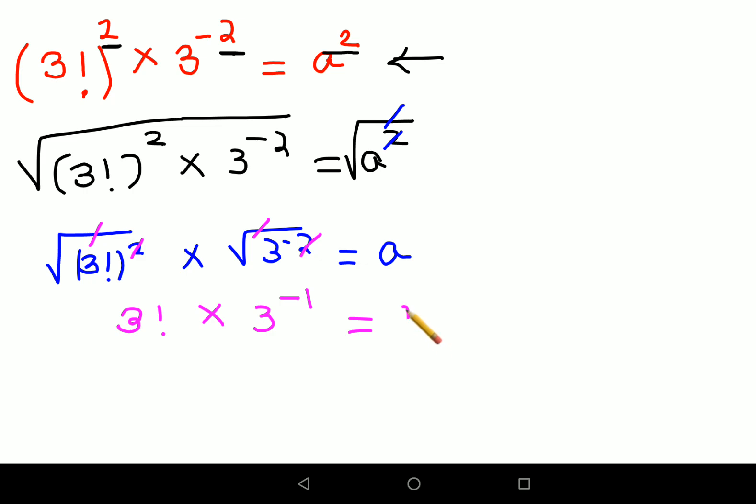3 factorial is nothing but what? 3 into 2 into 1. See, any number raised to minus any power can be written as positive but it has to be written in the reciprocal format. So this will become what? 1 upon 3 equals to a. Therefore I can say a value, this 3 and 3 is cancelling, a value is nothing but just 2.